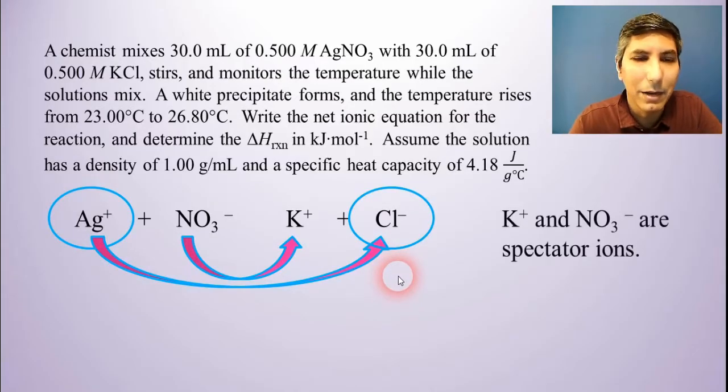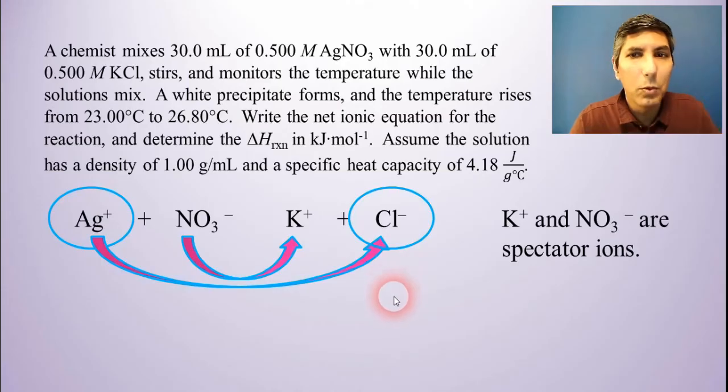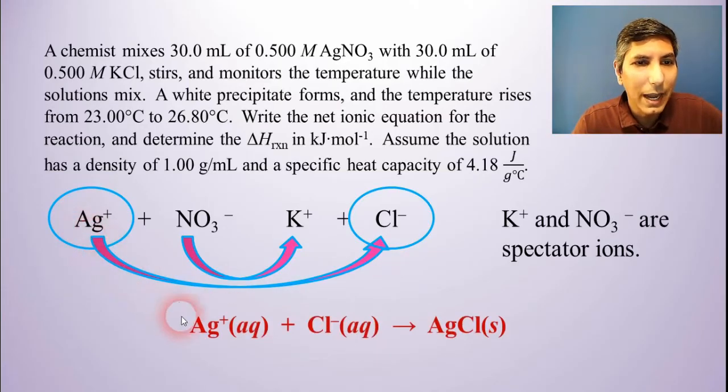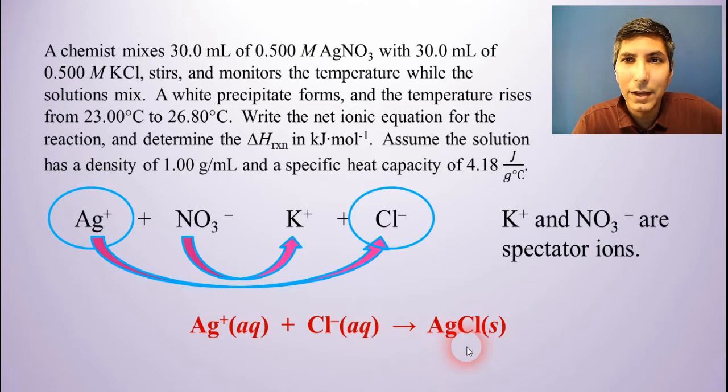Well, if you think back to your solubility rules, you will realize that it's silver getting with chloride. That means that potassium and nitrate ions aren't doing anything. They're just the spectator ions here. So when we write the net ionic equation, it's going to be silver cations aqueous plus chloride anions aqueous. They'll get together and form a product of solid silver chloride, AgCl. So that's the net ionic equation. So that's the first part of this.